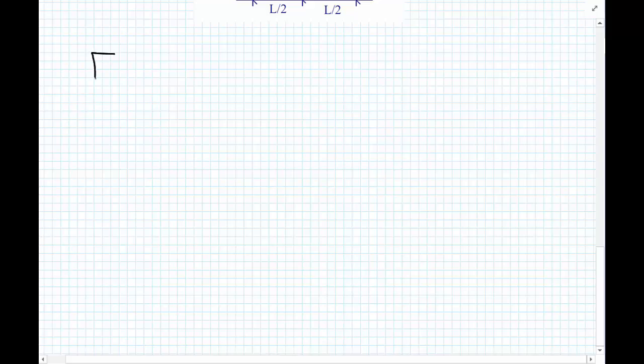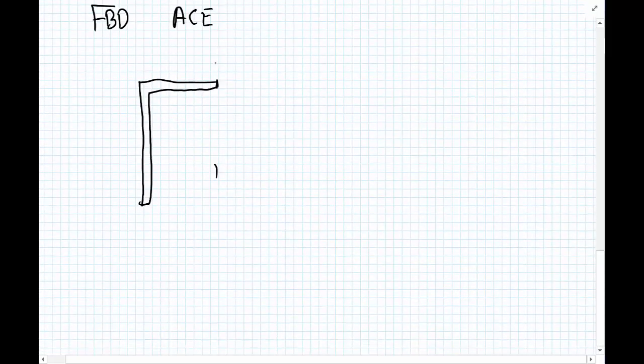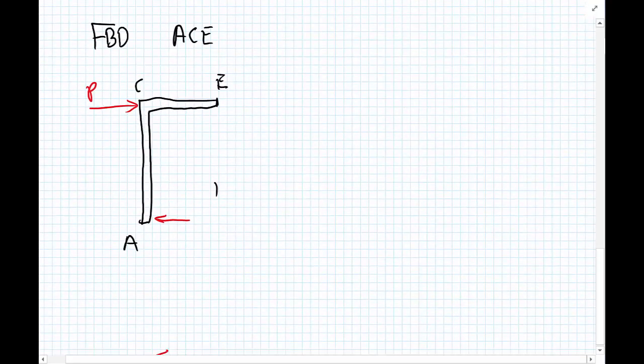So let's draw the free body diagram of ACE. So we have half of the beam and we have the column, so that's E, C, and A. We have the point load P acting at C, we have the horizontal reaction at A which is P upon 2, and we will have the vertical reaction RAY pointing downwards.